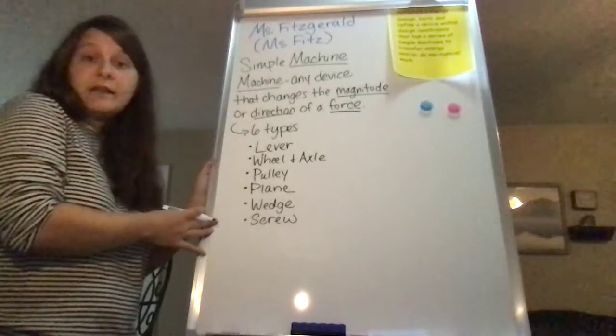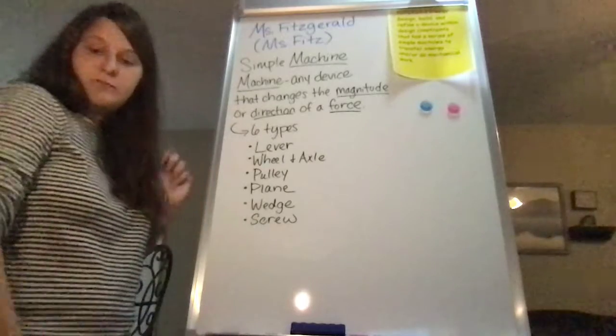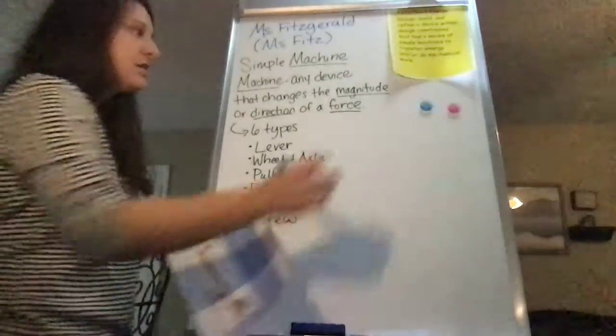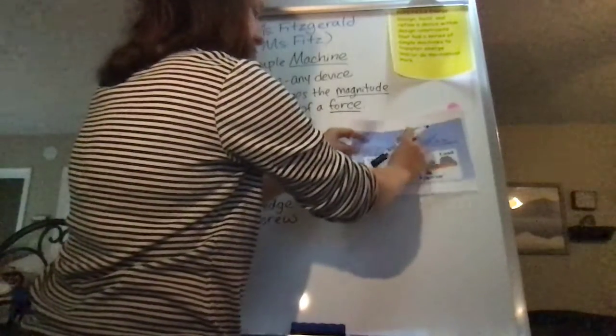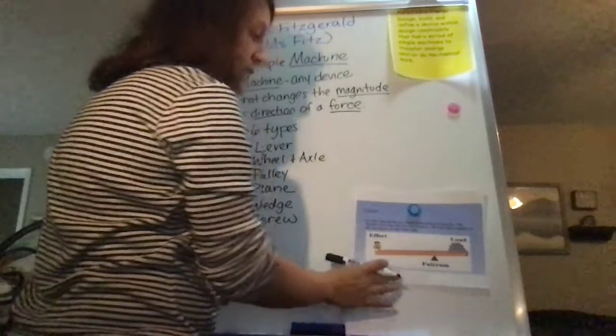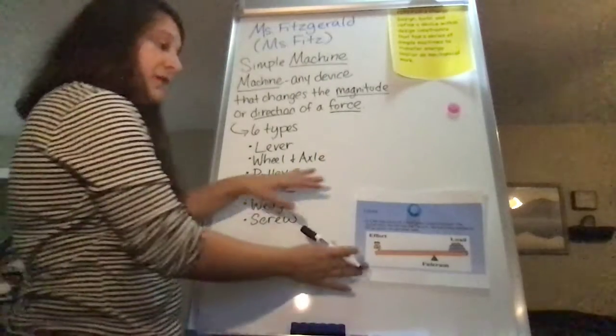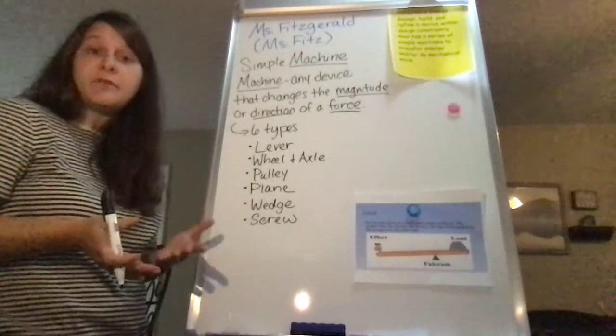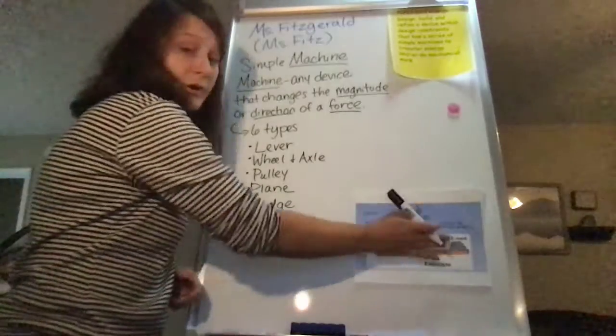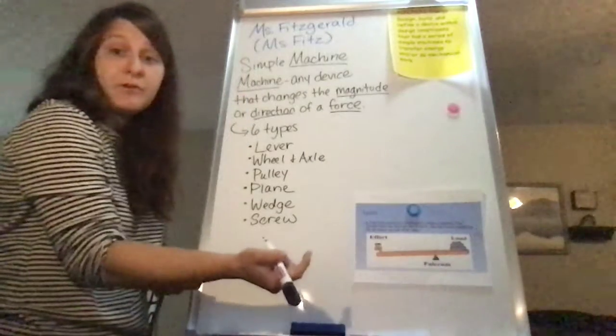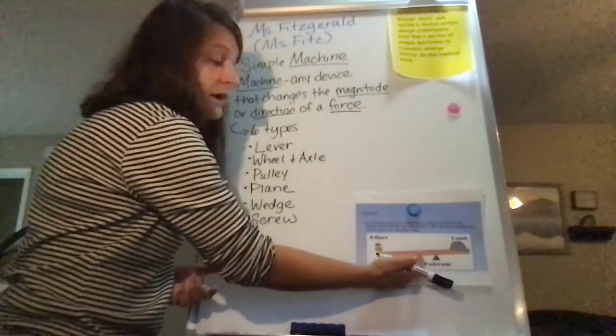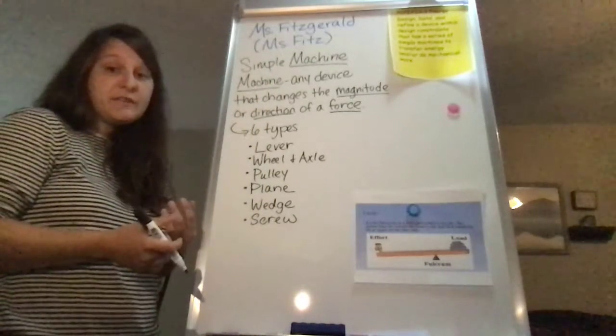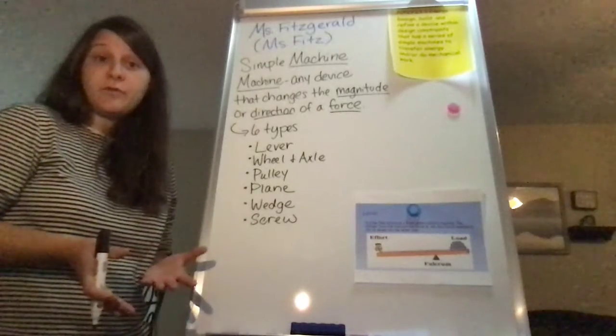So let's go through these one by one and I'll explain exactly what qualifies as a simple machine. The first is a lever. A lever is a bar that pivots at a fixed point called a fulcrum. So a classic example of a lever would be a seesaw. Okay, it has a bar, right? And then the fulcrum or the point where it pivots is right here in the center. And what a lever does is it changes the magnitude and the direction of your force. It does both.